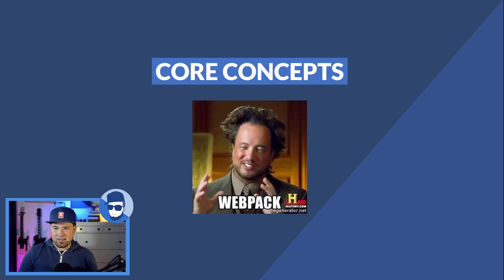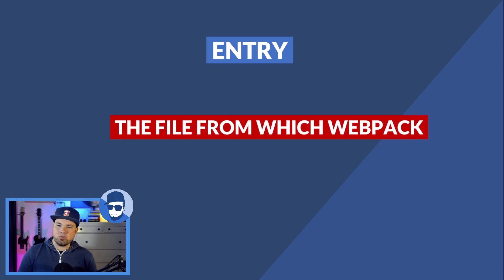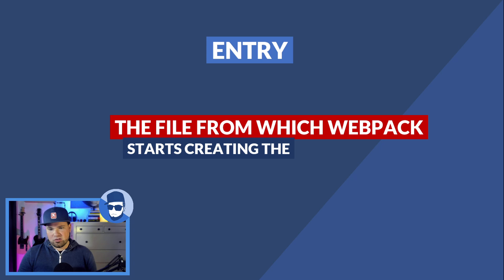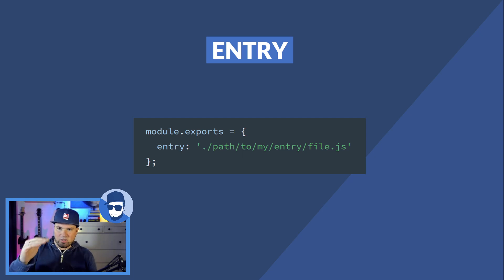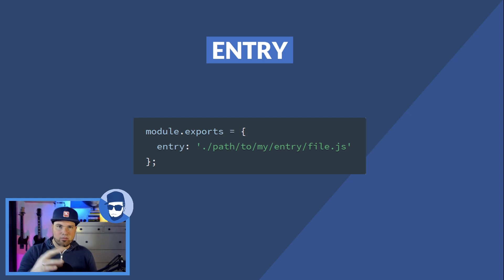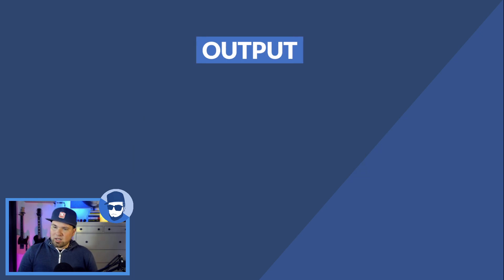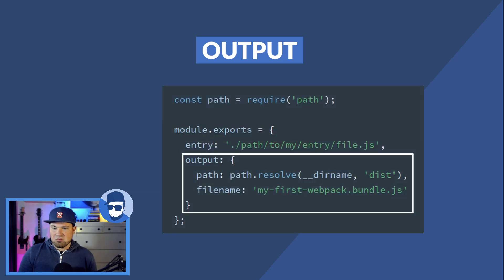Let's talk about the core concepts. The entry file is the file from which Webpack starts creating the dependency graph. It's actually very simple — you just say 'entry' and point to your file, so this is the index file of your application. Here you declare all your JavaScript — your Vue files, your React components, and so on — and you can also load your CSS here. This file contains everything you need, and then the dependency graph is built from this.